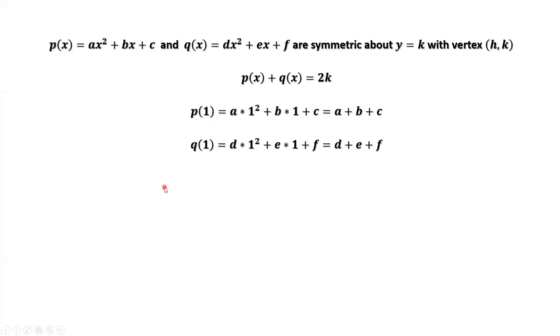If we consider the sum of P of 1 plus Q of 1, we have A plus B plus C plus D plus E plus F. This is what we want to find. By this result, for any x, the sum of P of x plus Q of x equals 2k. If x equals 1, this is also true. The left-hand side, P of 1 plus Q of 1 equals 2 times k. Therefore, A plus B plus C plus D plus E plus F equals 2k.